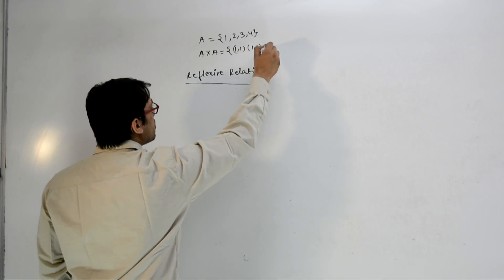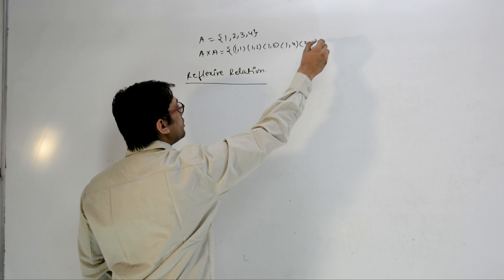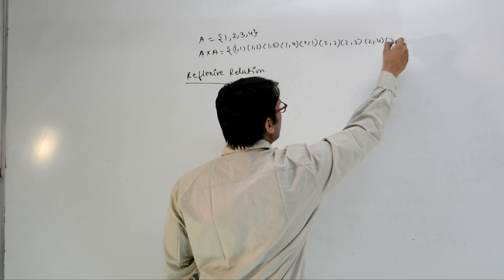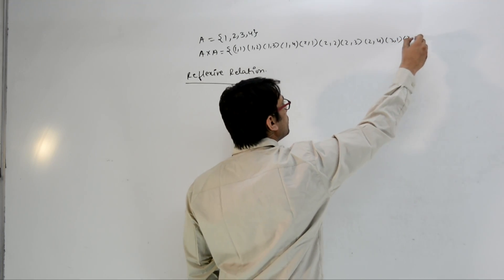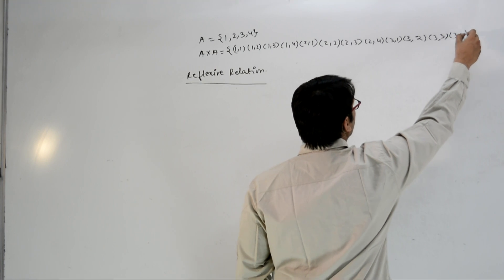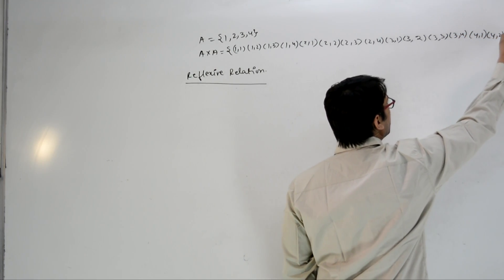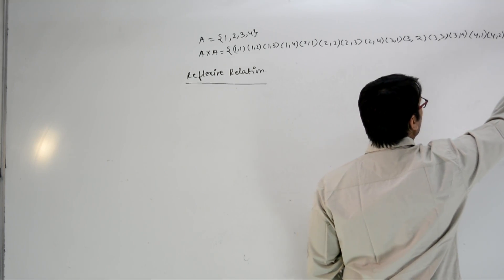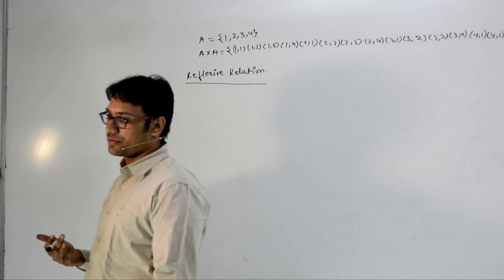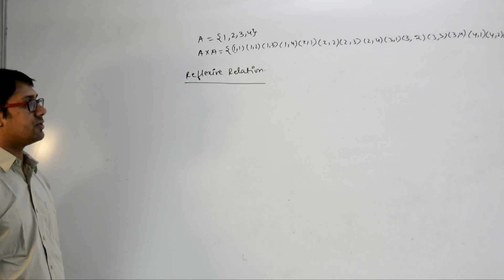So A×A contains (1,1), (1,2), (1,3), (1,4), (2,1), (2,2), (2,3), (2,4), (3,1), (3,2), (3,3), (3,4), (4,1), (4,2), (4,3), and (4,4). I am writing this now because I don't want to write it again for every type of relation I specify. I am going to specify all these different types of relations over this set.